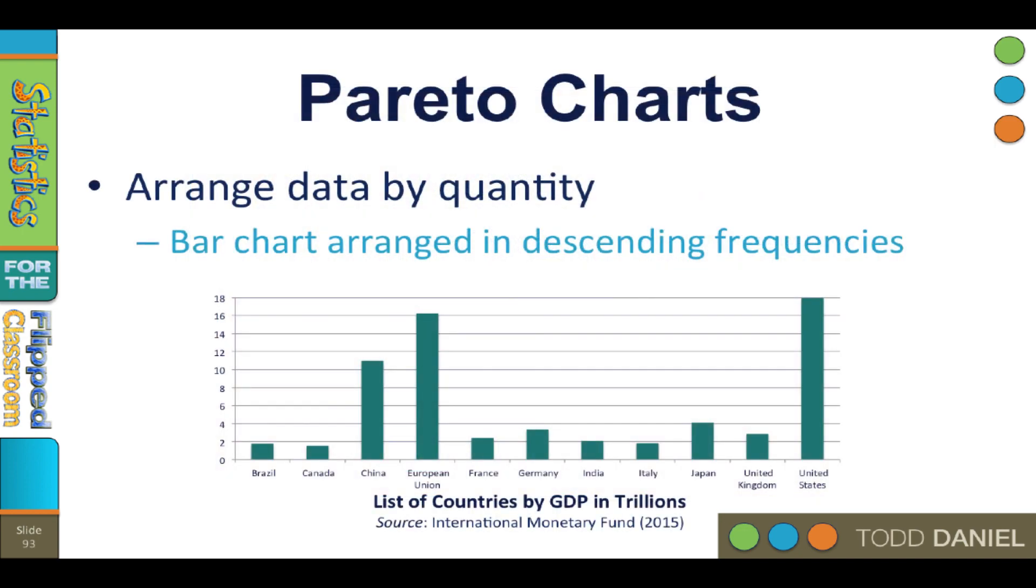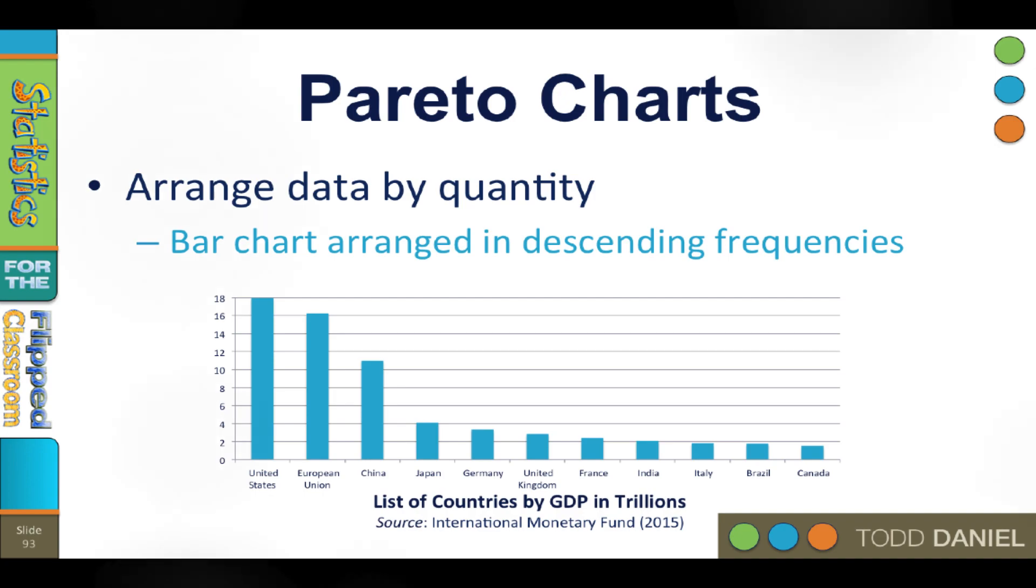A Pareto chart is a type of bar chart that arranges the data in descending frequencies, high to low. It's often used with nominal data to make comparisons between the items easier. In this case, we have the GDP for a number of countries. It's easy to see that the US is the highest and Japan is second, but who's third, fourth, fifth? It sure would be nice if we could just put them in descending order. Yeah, that is much better.